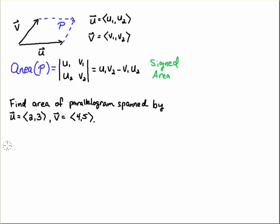If you wanted to find the area of a parallelogram spanned by these two vectors, u = <3, 3> and v = <4, 5>, now it depends on how I compute this determinant.